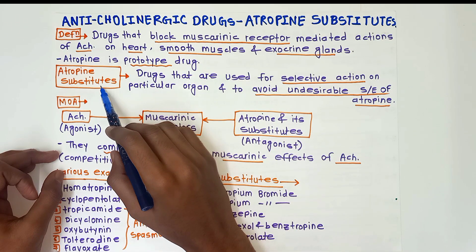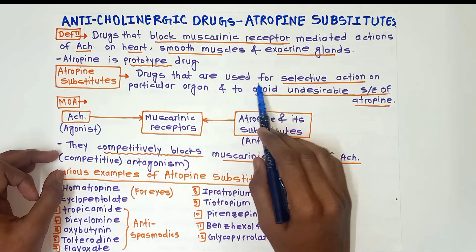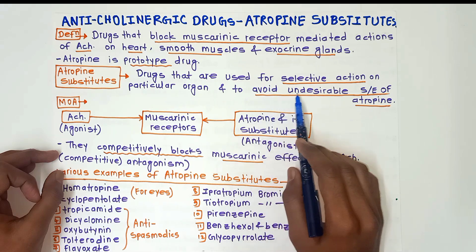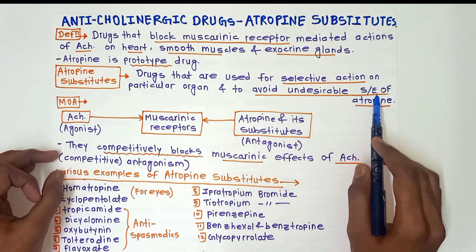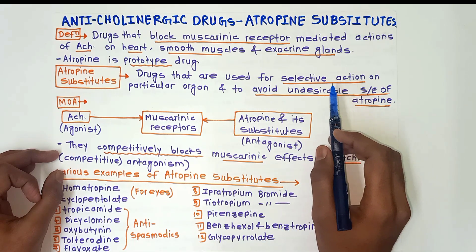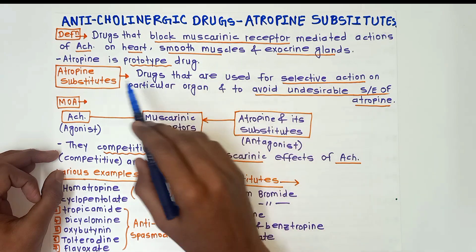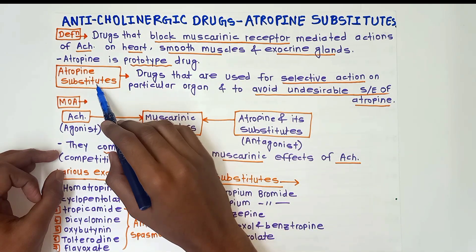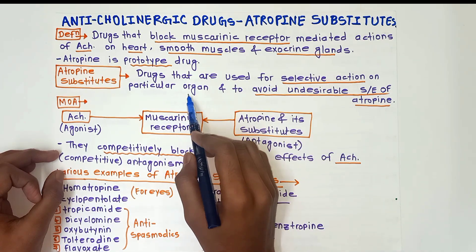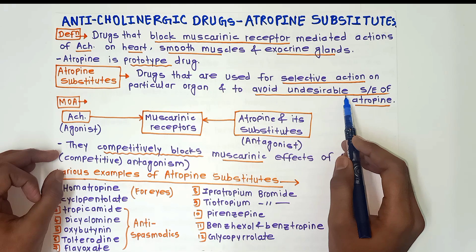The definition of atropin substitutes: these are drugs that are used for selective action on a particular organ and to avoid the undesirable side effects of atropin. Basically, atropin acts on many organs and causes undesirable side effects. In the case of atropin substitutes, they have selective action on a particular organ, so there is less chance of undesirable side effects.